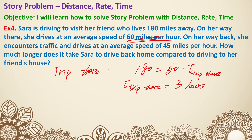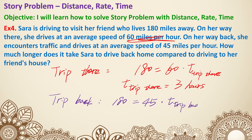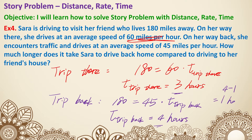For the trip back: it is still 180 miles, but the rate is 45 miles per hour. So 180 equals 45 times T, and dividing gives the trip back as 4 hours. The difference between 4 hours and 3 hours is 1 hour — the trip back is one hour longer. That's example four.